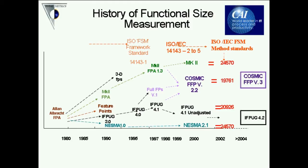People took Albrecht's concept and started developing different methodologies. The three major ones that came out of that early work were Mark II — which went on to become a full ISO standard — and IFPUG function points. In the late 1990s, the Canadians developed Full Function Points for process-driven software, which was similar to IFPUG but more aligned with Mark II. A group of experts working on the ISO framework then got together to distil the essential ingredients from Mark II, Full Function Points, IFPUG, and NESMA, to develop a new functional size measurement called COSMIC.